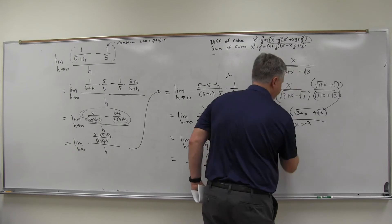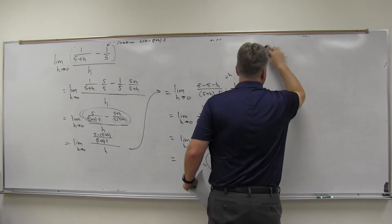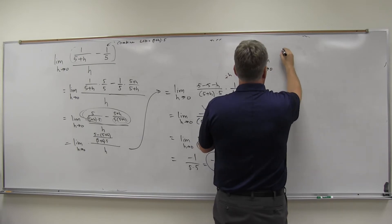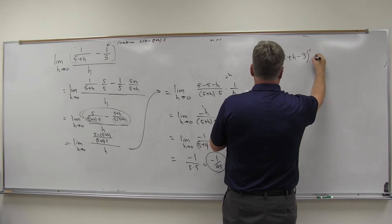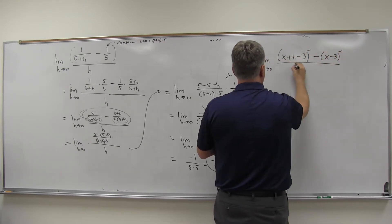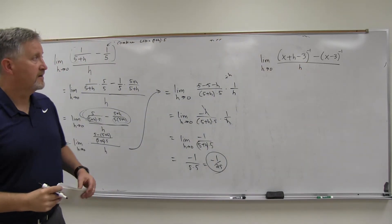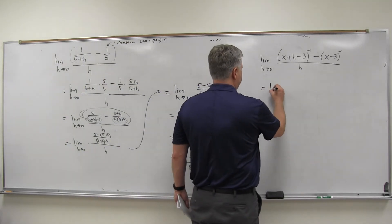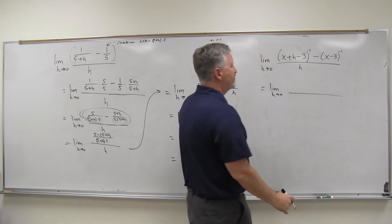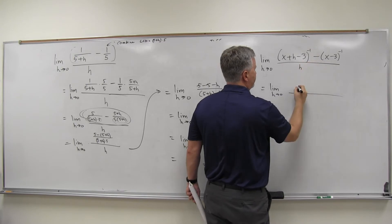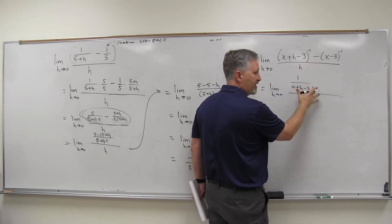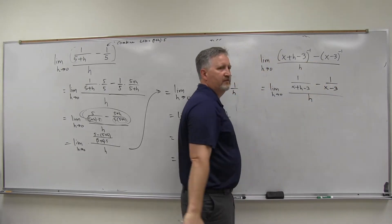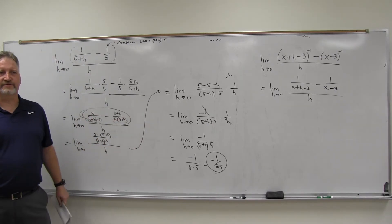Let's try one more. We've got the limit as h approaches zero of x plus h minus three to the negative one power minus x minus three to the negative one power, over h. This is similar to the one we just did. X plus h minus three to the negative one means one over x plus h minus three, and x minus three to the negative one just means flip it over. They write that sometimes in the book, so just be aware — that's really what they mean.